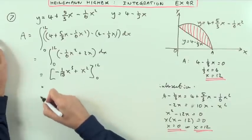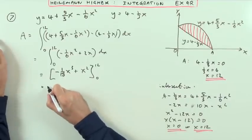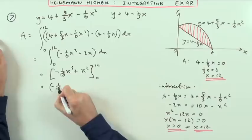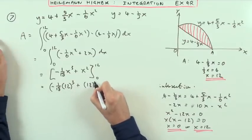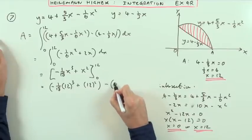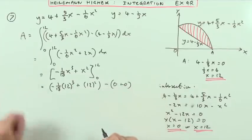Well, there's not a lot to working it out at zero, so at least it's not as bad as it did look initially. So I've got negative an 18th of 12 cubed plus 12 squared. But minus, I'll just put it down as zero plus zero, because those two terms will both be zero.